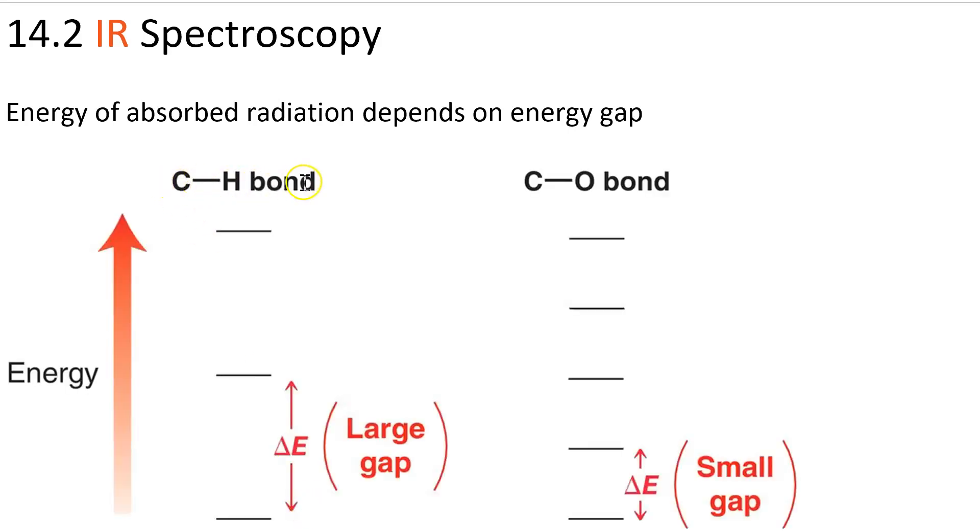With a CH bond, the energy gap between vibrational levels is large, so they're going to absorb photons at a high frequency.